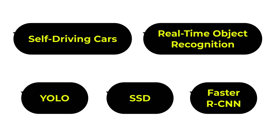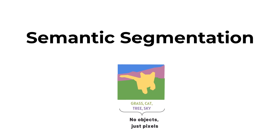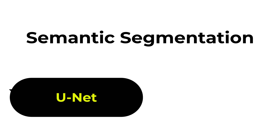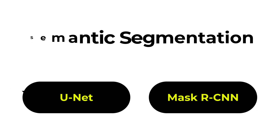Another computer vision topic is semantic segmentation. In this task, you want to classify and separate different objects in an image. You can leverage U-Net and Mask R-CNN techniques for this task.